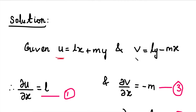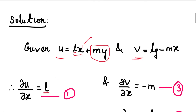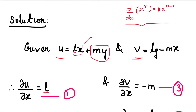Given u equals lx plus my, differentiating partially with respect to x: x is the variable and y is the constant. So in the right-hand side the second term (my) is constant, differential value 0. In the first term, l is constant and x is variable, so l times the derivative of x power 1 equals l times 1 equals l. So ∂u/∂x equals l.